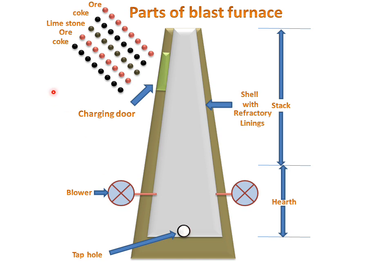Now the charge is added layer by layer: ore, coke, limestone, ore, coke. Limestone will act as a flux, which will combine with the impurities of the ore and make a slag, and this slag will be extracted further.